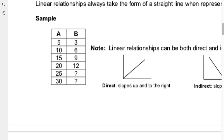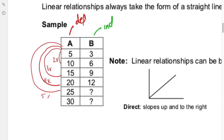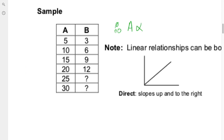Let's try a sample problem. With the independent variable on the left and A as the dependent variable, we look at the jumps: 5 to 10 is two times, 5 to 15 is three times, 5 to 20 is four times, 5 to 25 is five times, 5 to 30 is six times. On the dependent side: 3 to 6 is two times, 3 to 9 is three times, 3 to 12 is four times. Predicting the pattern, the next should be five times giving 15, and six times giving 18. The multipliers match, so A is proportional to B.